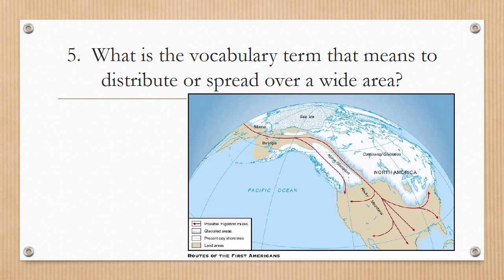Number five: what is the vocabulary term that means to distribute or spread over a wide area? The term is disperse. You can see a red line representing the dispersing of many different Native American peoples — following the land bridge theory, the red line goes through the Bering Strait and then tapers off, dispersing into multiple directions depending on where each people group traveled and finally settled.